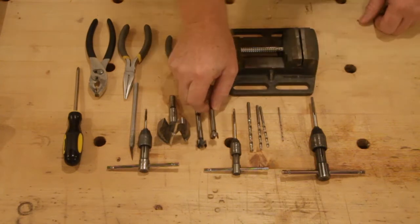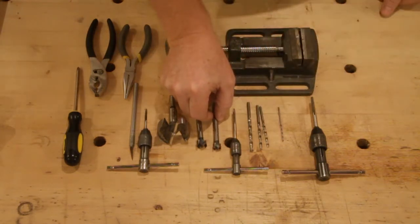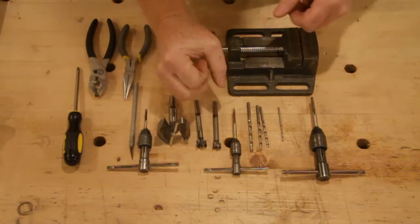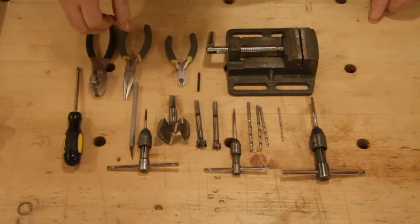I like the Forstner bits because they cut a nice flat cut at the bottom and they don't pull your work or they don't grab your work and pull it up onto the drill. It's much easier to hold your work.